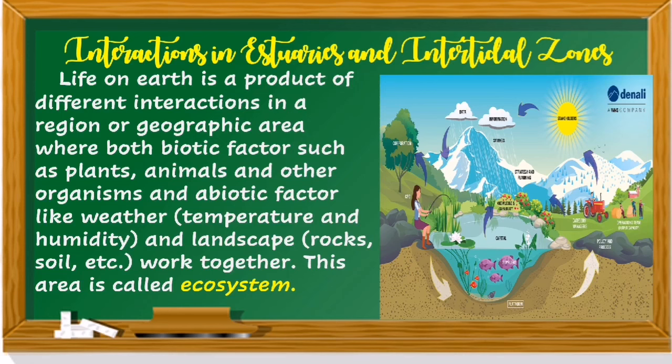Life on Earth is a product of different interactions in a region or geographic area where both biotic factors such as plants, animals, and other organisms, and abiotic factors like weather, temperature and humidity, and landscape, rocks, soil, etc., work together. This area is called ecosystem.